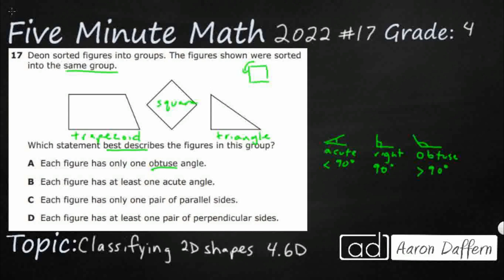So I've got an obtuse angle right here. I'll just put an O right there. I don't have any obtuse angles on this one. Those have got four square corners. And then I don't have any obtuse angles on this one. It's got one square corner. But the rest are going to be acutes. And then that's going to be acute. I'll put an A right there. So it's not A because it's only one figure that has an obtuse angle, not each figure. That's the problem.